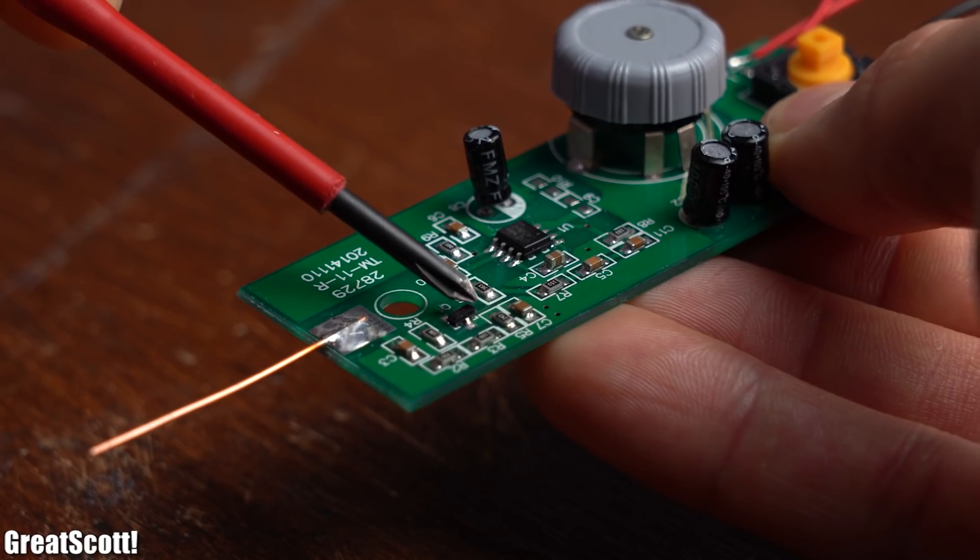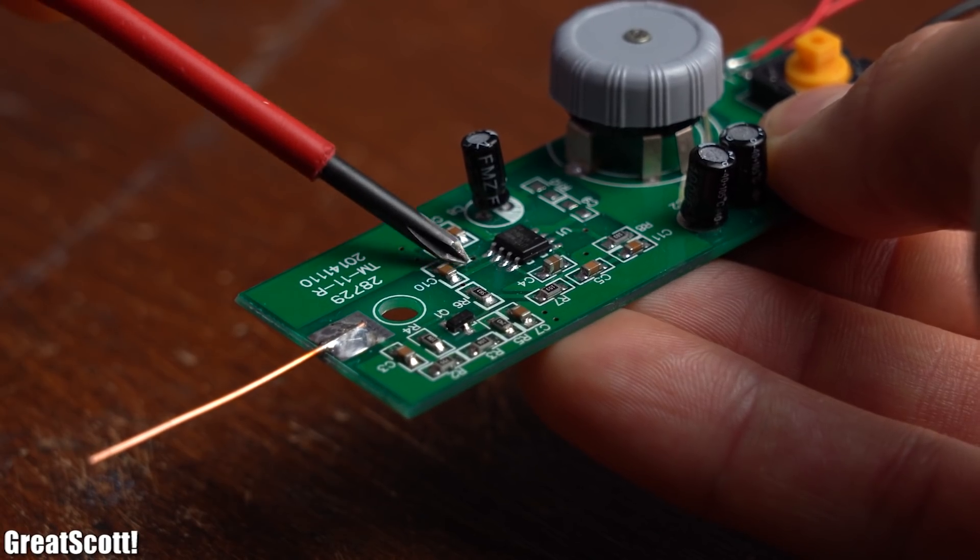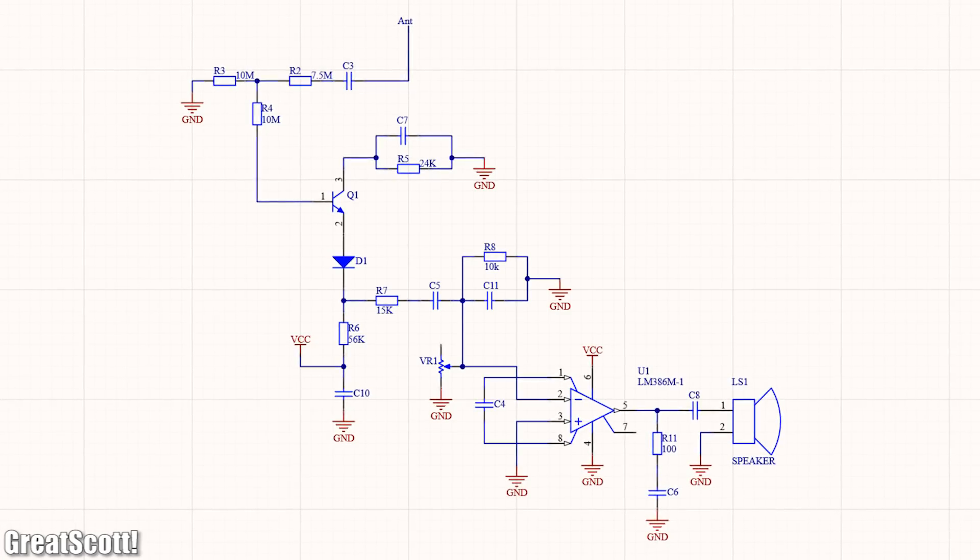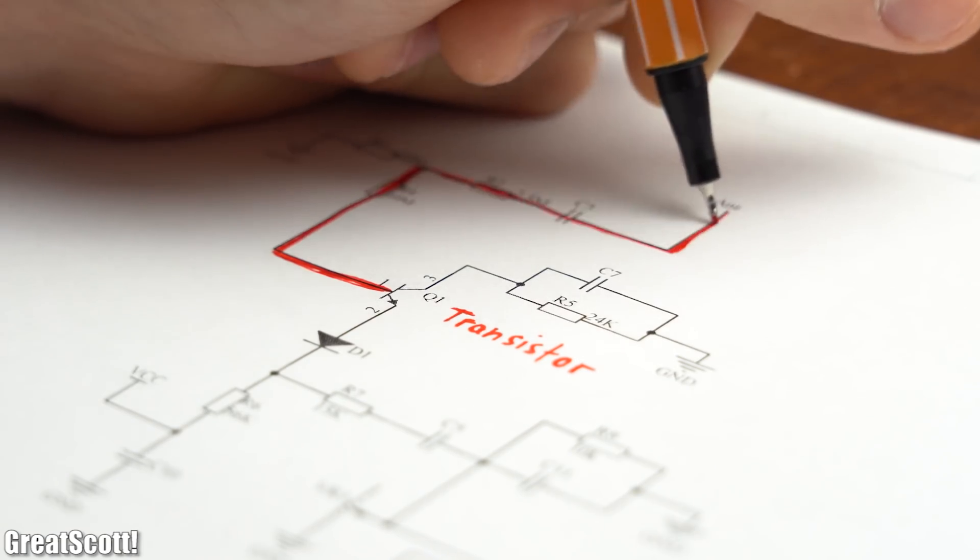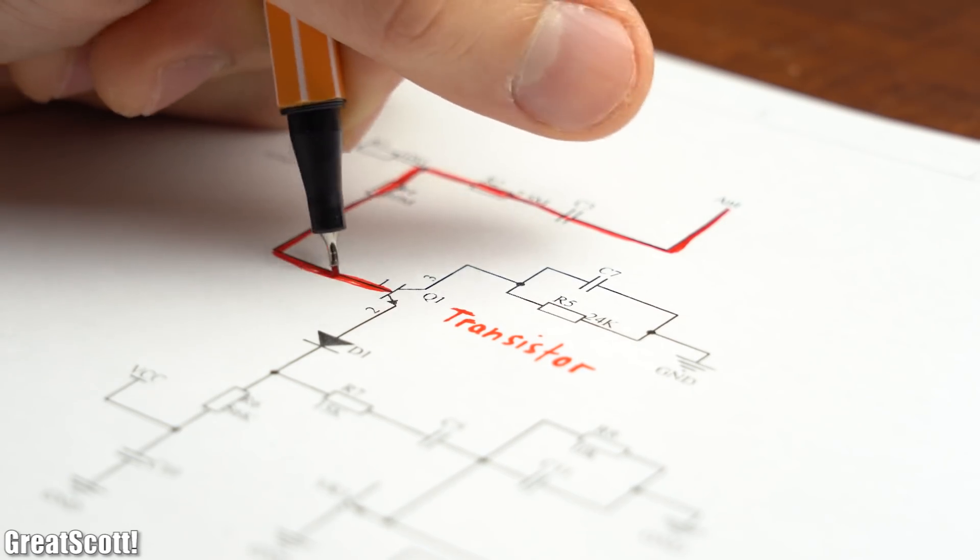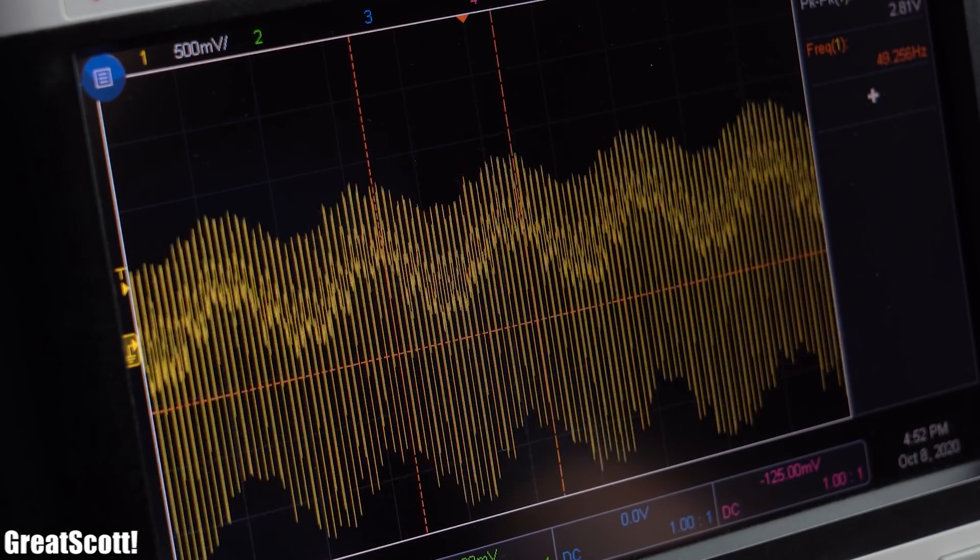So once again, time to reverse engineer the circuit, which this time was quicker to do and the end result was also easier to understand. Simplified speaking, the received signal through the antenna controls the gate of a transistor, which preamplifies the received signal as you can see here on the oscilloscope.